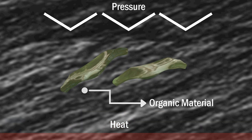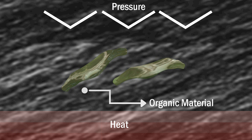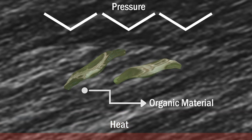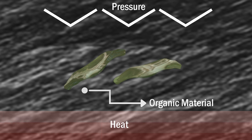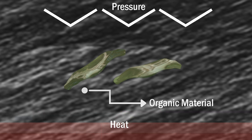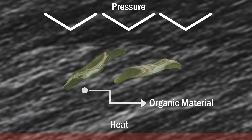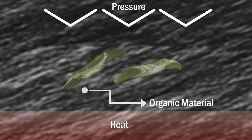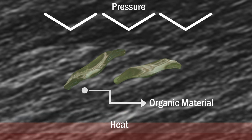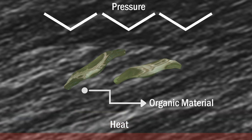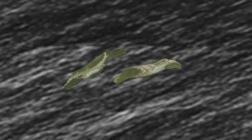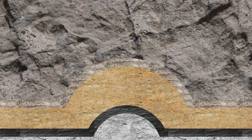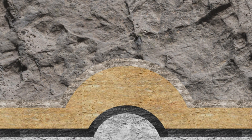Hydrocarbons are formed when large quantities of dead organisms, mostly zooplankton and algae, are buried underneath sedimentary rock and subjected to extremely high heat and pressure. With the aid of anaerobic bacteria, this organic matter is synthesized into hydrocarbons after millions of years through a process called cooking.